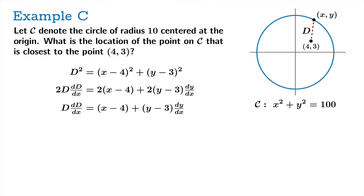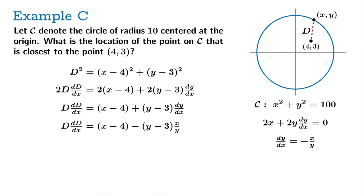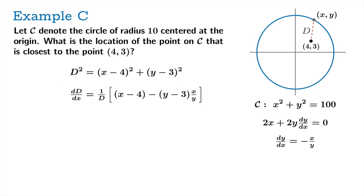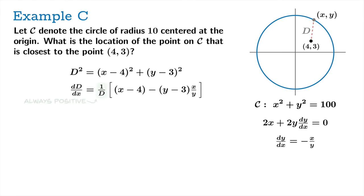Taking the derivative implicitly with respect to X gives: 2D times dD/dx equals 2 times the quantity X minus 4, plus 2 times the quantity Y minus 3 times dy/dx. Don't forget the chain rule. Canceling factors of 2, we need dy/dx. We haven't yet used the constraint that the point lies on the circle X squared plus Y squared equals 100. Differentiating that implicitly gives dy/dx equals negative X over Y. Substituting this in and dividing through by D gives a formula for dD/dx.